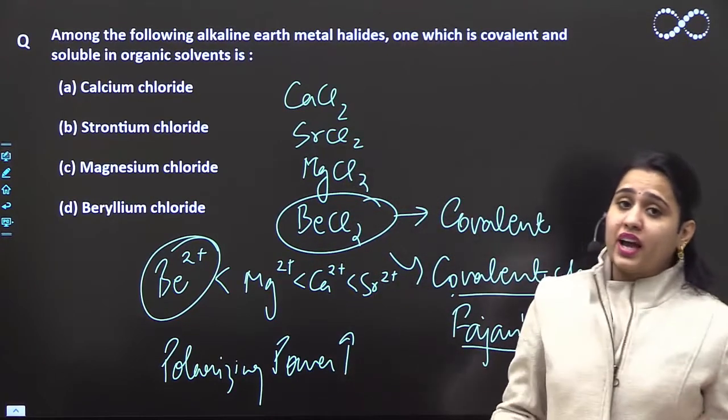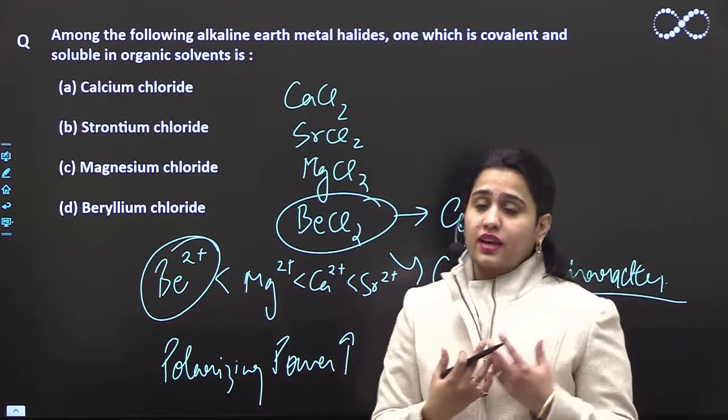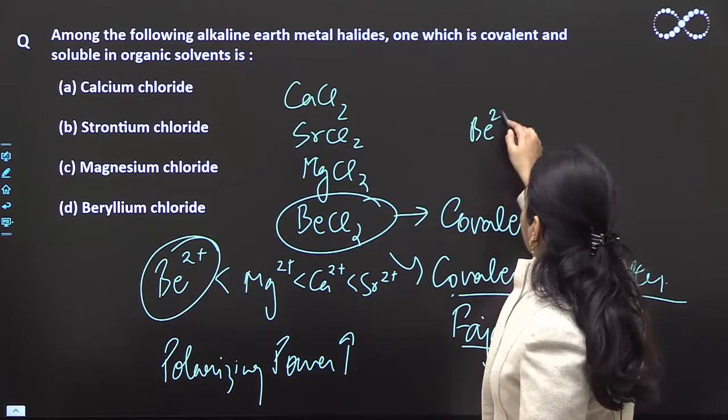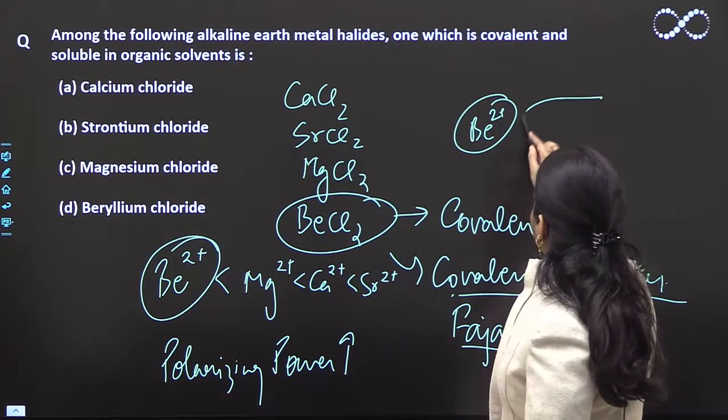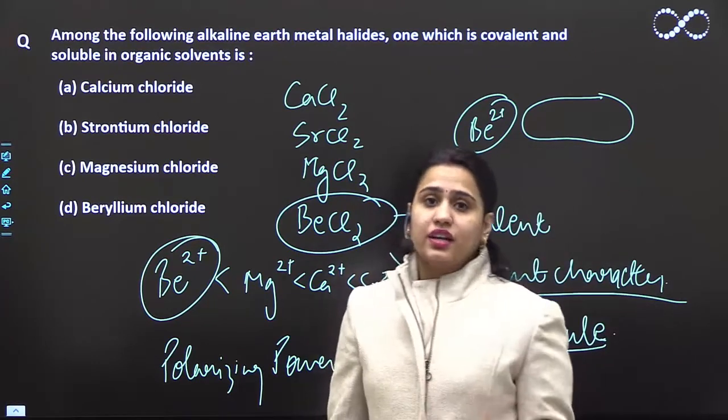The greater the polarizing power, the more it can distort the negative charge of the anion toward itself. So if we have Be2+, it will distort the negative charge cloud toward itself more, which induces more covalent character.